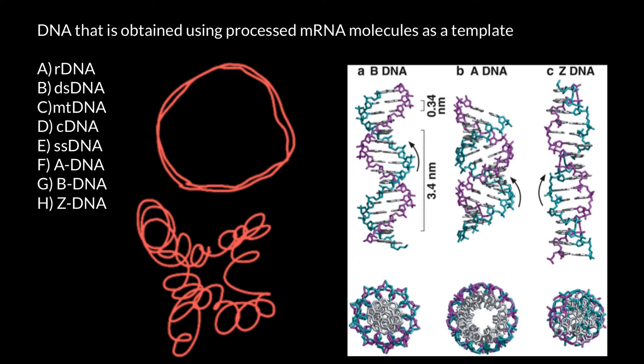So now you know that these three forms have nothing to do with processed messenger RNA as template, so we can cross out answers H, G, and F.